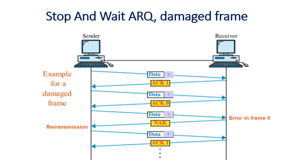In Stop and Wait ARQ with a damaged frame, for example, data frame number 0 is sent and a positive acknowledgement ACK 1 is received. Again, data frame 1 is sent and ACK 0 is received. For the third frame, data frame number 0 receives a negative acknowledgement. Once a negative acknowledgement is received because there was an error in the frame, it will be re-transmitted by the sender. The sender sends the same data frame number 0 again, and if it is received correctly, the receiver sends ACK 1.